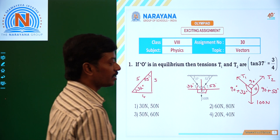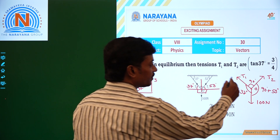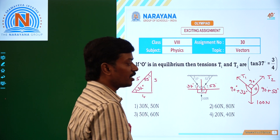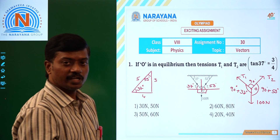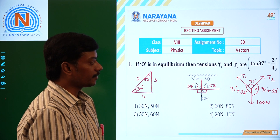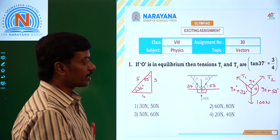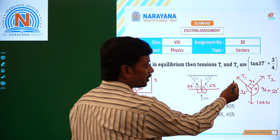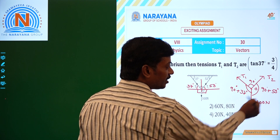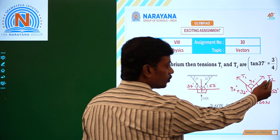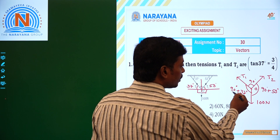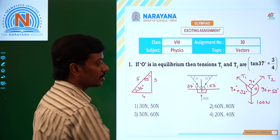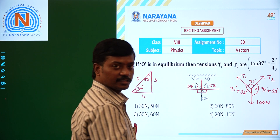According to Lamy's theorem, if 3 unequal forces are acting about the point O and if the point O is in equilibrium, then: T1 divided by sin(90° + 53°), T2 divided by sin(90° + 37°), is equal to 100 divided by sin 90°.